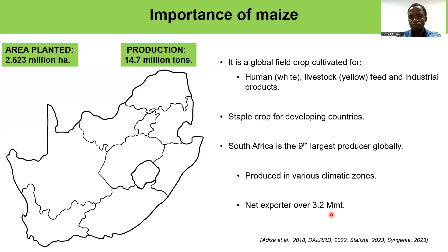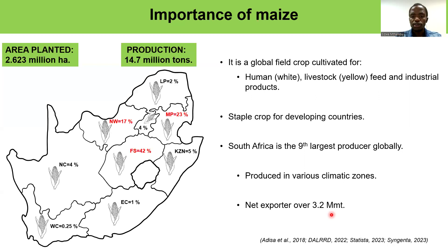Maize is an important cereal crop that is cultivated and consumed worldwide. It is considered a staple crop for most developing countries, and South Africa is ranked number nine as the largest producer of maize. The production of maize in South Africa occurs under various climatic zones.